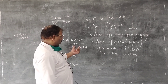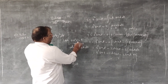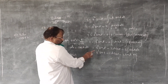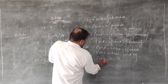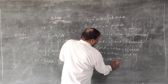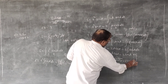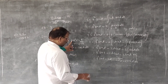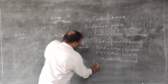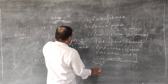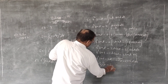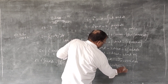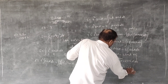Now substituting back: sin t = x and t = sin⁻¹x. To convert cos t, use cos t = √(1 − sin²t) = √(1 − x²). So: i = (sin⁻¹x)² · x − 2 sin⁻¹x · √(1 − x²) − 2x + c.